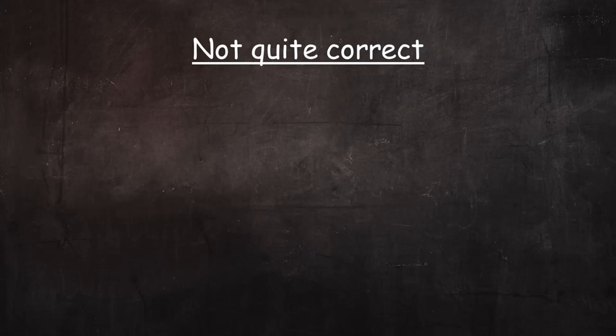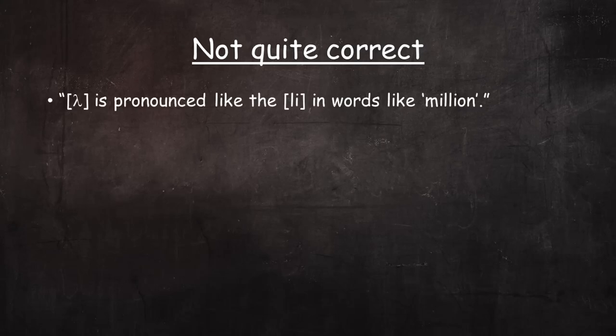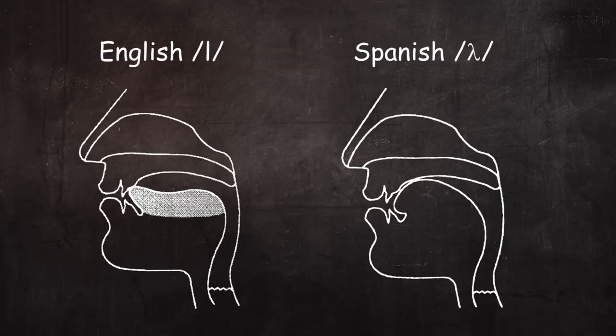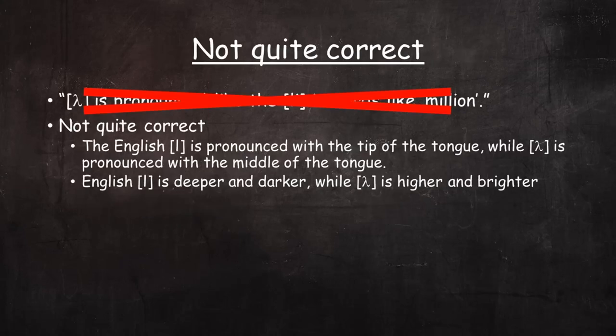One thing you might read online about how to pronounce this sound that is not quite correct is that elie is pronounced like the L-I combination in English words like 'million.' This is not really true for two reasons. First, English L is pronounced with the tip of the tongue against the alveolar ridge, while Spanish elie is pronounced more with the middle part of the tongue approximating the middle of the palate. And second, English L is a deeper and darker sound, while Spanish elie is higher and brighter. Go back and listen to how the list of words with elie was pronounced and see if you can hear the difference between elie and English L-I in words like 'million.'